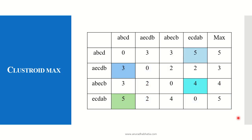Next, we find the maximum edit distance in each row of the matrix. For ABCD, the maximum conversion cost to any other string is 5. For AECDB, the maximum is 3. For ABECB, the maximum is 4. For ECDAB, the maximum is 5.